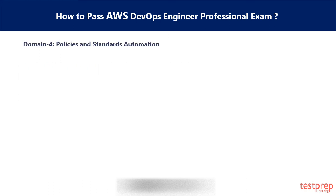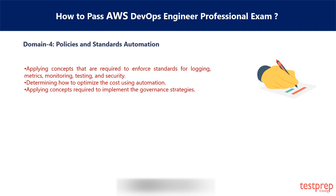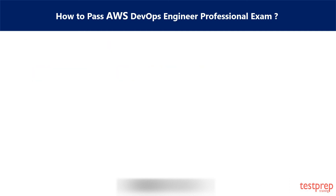Domain 4 is Policies and Standards Automation. In this module, there are concepts related to monitoring, automation, and implementing strategies. The 4th domain covers 10% of weightage in the exam. The sections included are: 1. Applying concepts required to enforce standards for logging, metrics, monitoring, testing, and security. 2. Determining how to optimize cost using automation. 3. Applying concepts required to implement governance strategies.